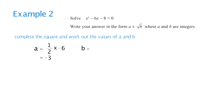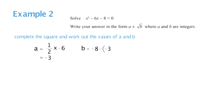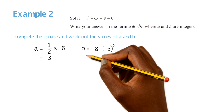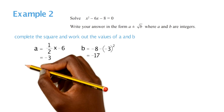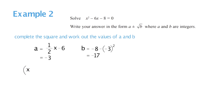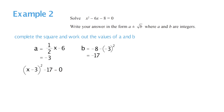Then our b value — remember we work it out by doing q minus a squared. Our q value in this scenario is minus 8, take away negative 3 squared — put brackets around negative 3 so you don't get confused with the negatives. That gives us a b value of minus 17. Then we write it in completing the square format: (x minus 3) squared minus 17, and remember this is all equal to 0.